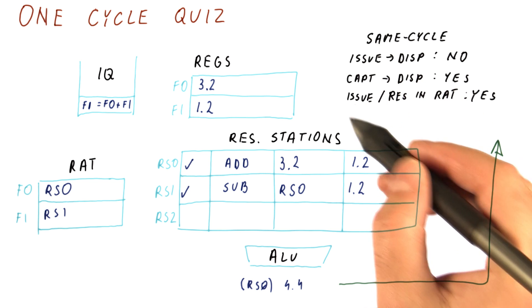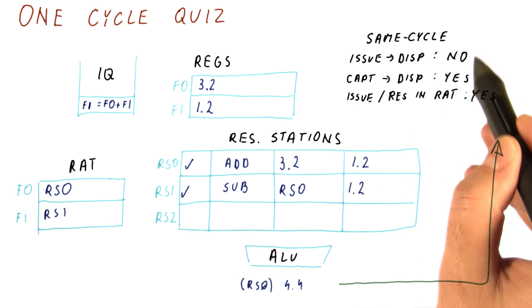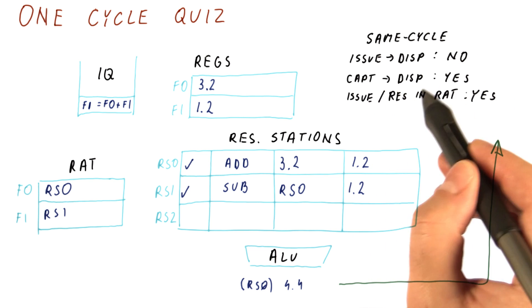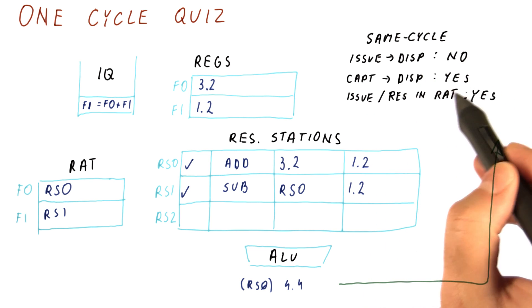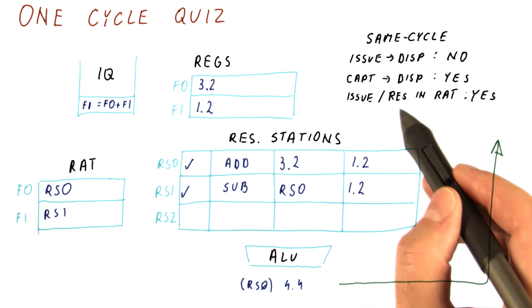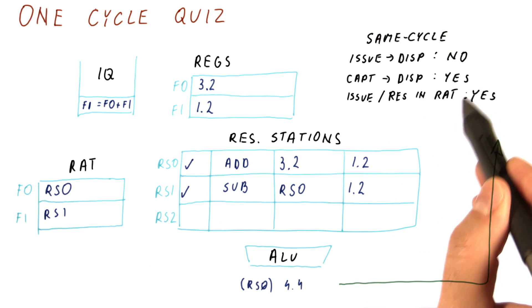This is what is allowed to happen in the same cycle. Issuing and then dispatching the instruction cannot happen in the same cycle. Capturing a result and then dispatching can happen in this particular processor. And then issuing and broadcasting of a result for the same RAT entry is, of course, also allowed.